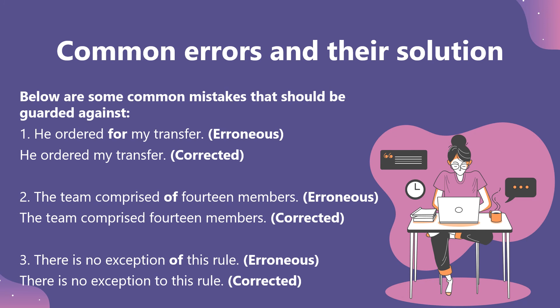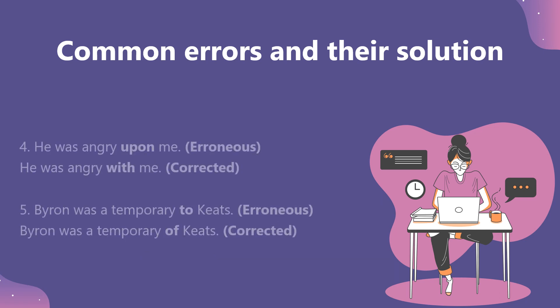Common mistakes to guard against. Incorrect: 'He ordered for my transfer.' Correct: 'He ordered my transfer.' Incorrect: 'The team comprised of 14 members.' Correct: 'The team comprised 14 members.' Incorrect: 'There is no exception of this rule.' Correct: 'There is no exception to this rule.' Incorrect: 'He was angry upon me.' Correct: 'He was angry with me.' Incorrect: 'Byron was a contemporary to Keats.' Correct: 'Byron was a contemporary of Keats.'